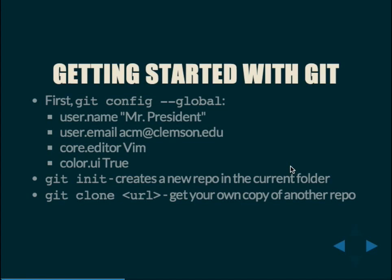If you want to set up individual settings, you do the same command — git config — without the --global option. For example, if we were setting up a git username for our president, we could say the username is 'Mr. President', the email is acm@cs.clemson.edu, the preferred editor is vim, and colors are enabled. The color.ui preference needs to be set to true because by default git assumes you don't have color support on your terminal.